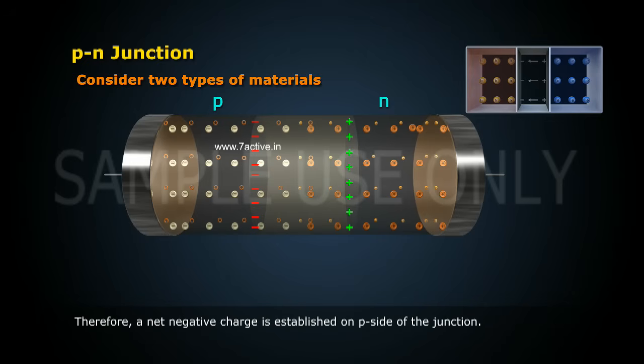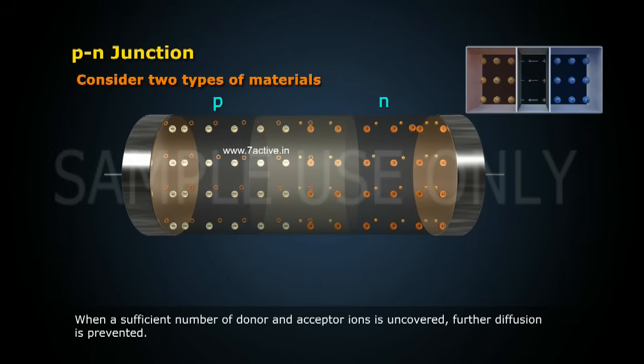Therefore, a net negative charge is established on the P-side of the junction. When a sufficient number of donor and acceptor ions is uncovered,